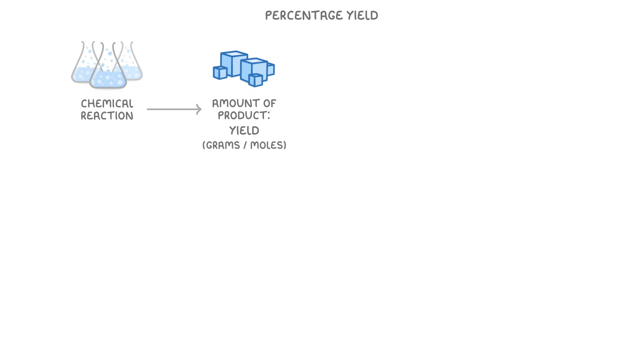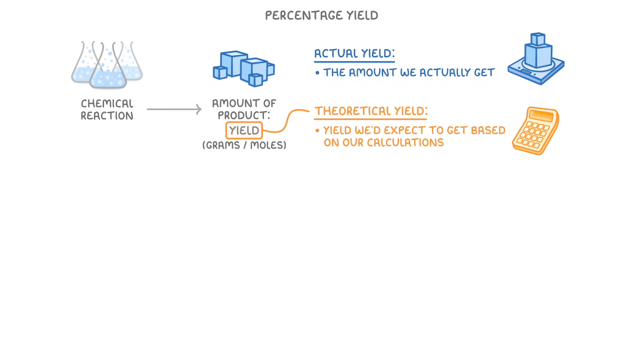To be more precise though, we can use the terms actual yield to describe the amount we actually get when we carry out the reaction, and theoretical yield to describe the yield we'd expect to get based on our calculations.